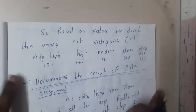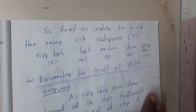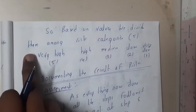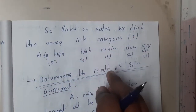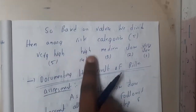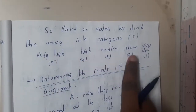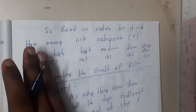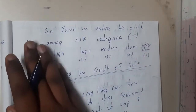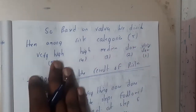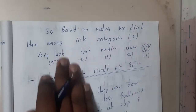The same process applies for the next example as well. Based on the calculated values, we divide risks into five different categories: very high, high, medium, low, and very low. Based on these categories you will define the level of risk for each item.